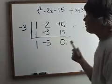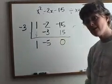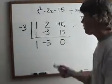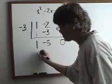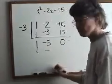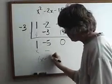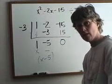Dude, I got a remainder of zero. That means yes, this baby does go in. And the cool part is this down here actually stands for the x and this is going to be your constant. So your other factor would be x minus 5. Sweet, huh?